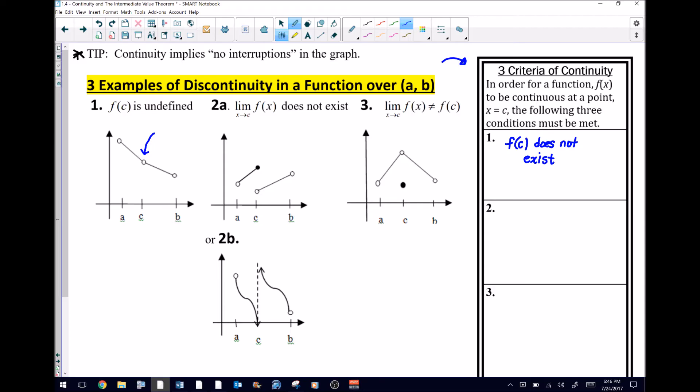That kind of makes one think, well is there a possibility that f of C could exist and the function could still not be continuous? If we look at the graph for 2a, we certainly have a situation where f of C does exist. You can see it's right here, whatever that value is. So that's not the problem. The problem as you can see up here is the fact that the limit of the function as x approaches C does not exist.